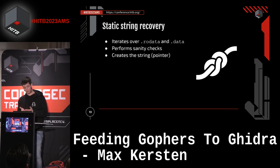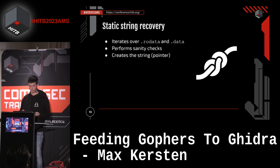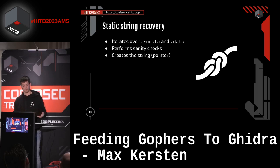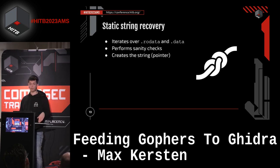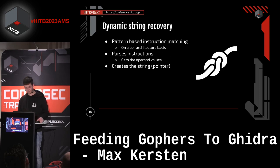In general, the static string recovery iterates over two segments of data within the binary. You could do this over all segments, but strings are only located in these sections so it's faster to just target those two. We perform sanity checks to make sure the instructions we're looking for actually result in a string and not garbage - because we're creating data structures in Ghidra automatically, we don't want to ruin your analysis by creating false ones. Then we create the string and pointers to it, which tells both the decompiler and disassembly to treat it as a string or string pointer.